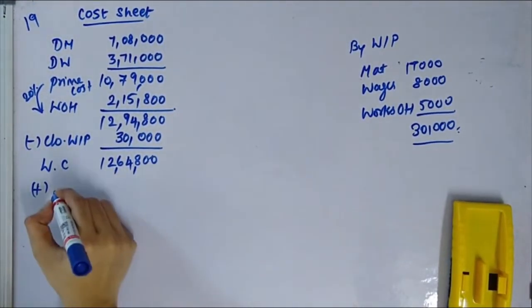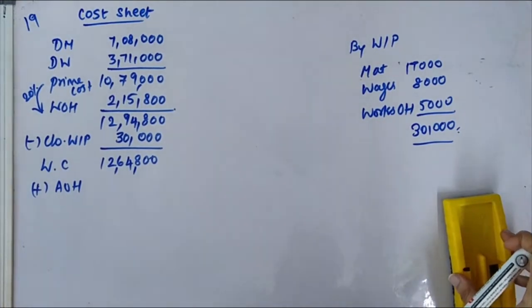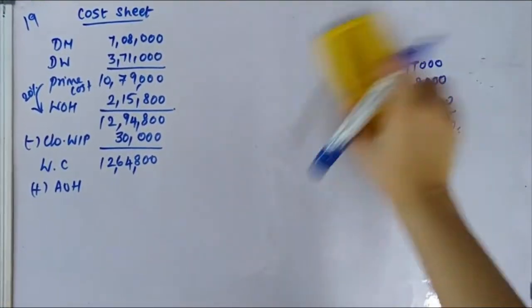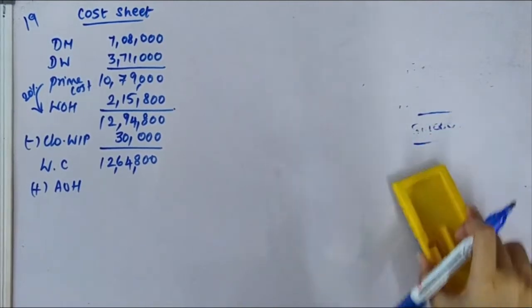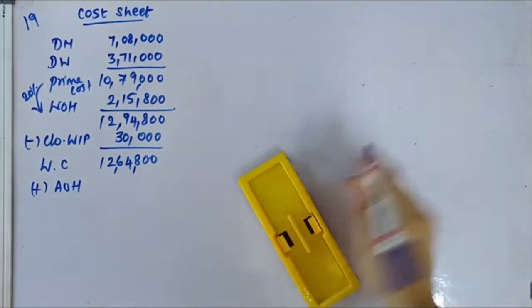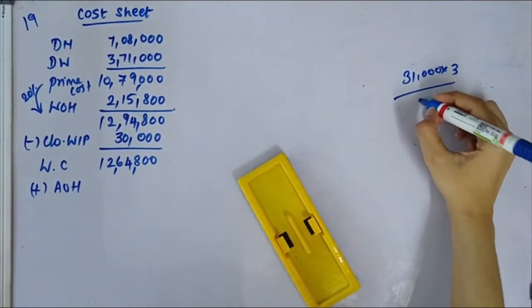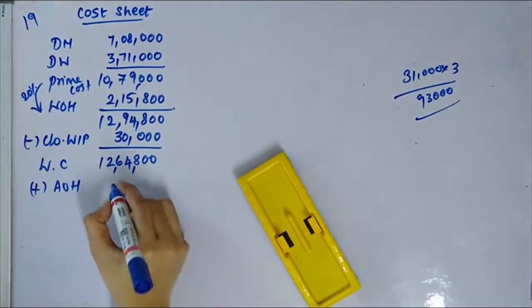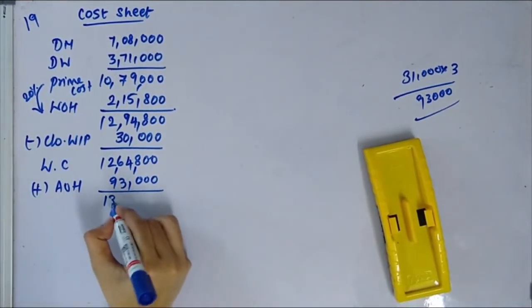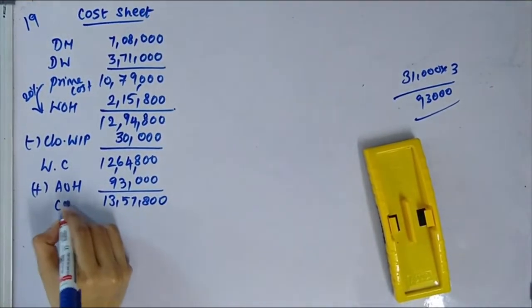Next, admin overheads. Finished units are 31,000 units. Admin overhead recovered at 3 rupees per finished unit: 31,000 into 3 gives 93,000. Adding 93,000 to works cost of 12,64,800 gives 13,57,800, which is the cost of production.